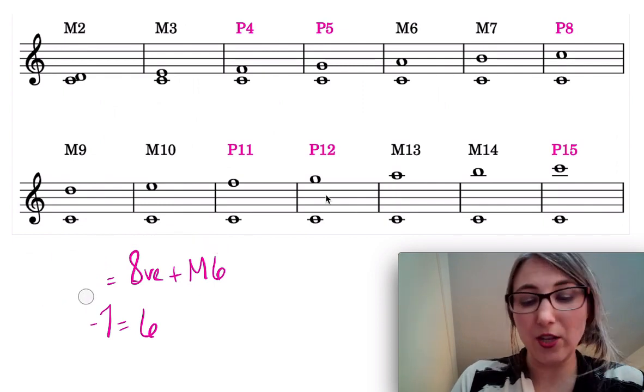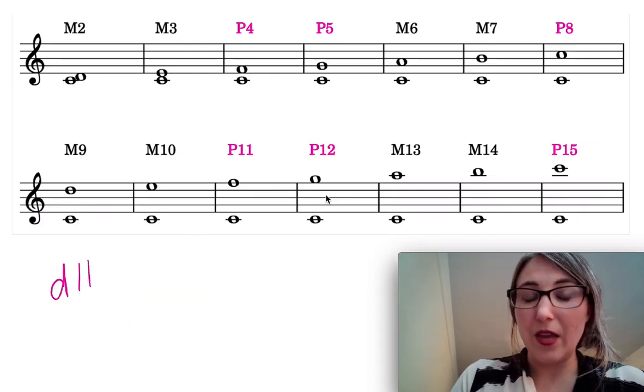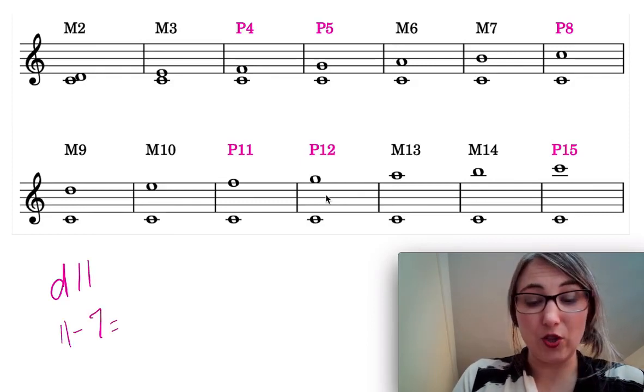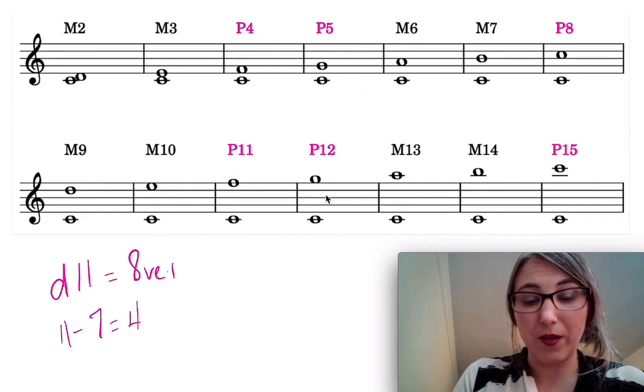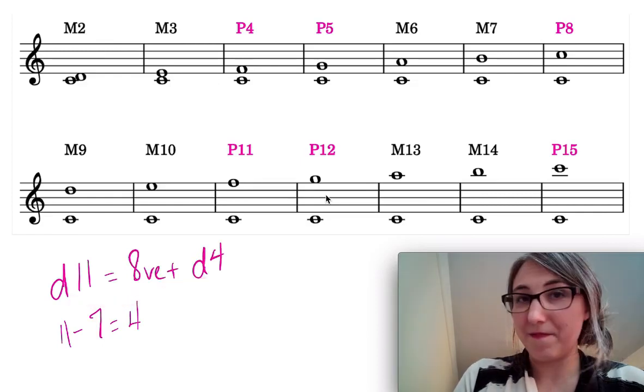Okay let's try another one. So imagine instead I say, well why don't you build for me a diminished 11th? So to determine what the simple interval would be I'd take 11 minus 7 which would be 4. Therefore a diminished 11th equals an octave plus a diminished 4th, right? Keeping the quality exactly the same. Make sense?